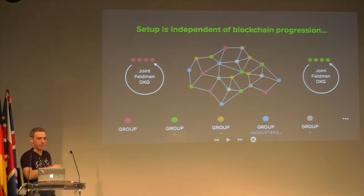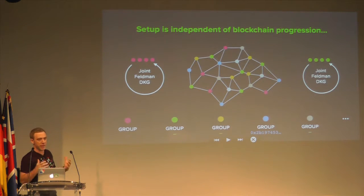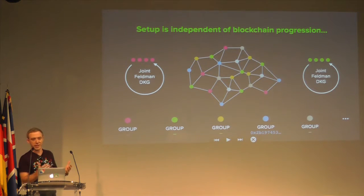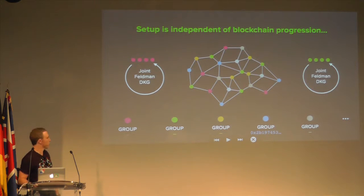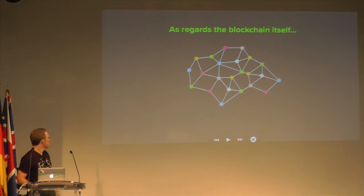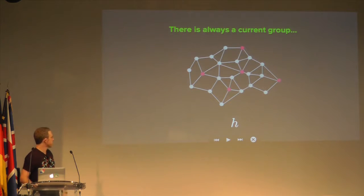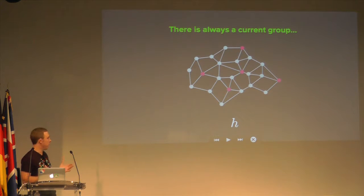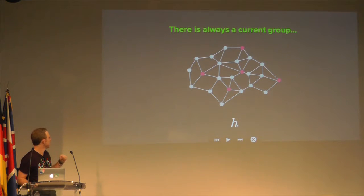The random beacon says you can go off and set up a group, and the group tries to set up independently. Typically there'll be a timeout — if within a thousand blocks they manage to do the distributed key generation protocol, they come back and register their group public key on the network. As regards the blockchain itself, at any particular height there is a current group. Here we're at height H with this pink group. We've got 400 processes in a group.